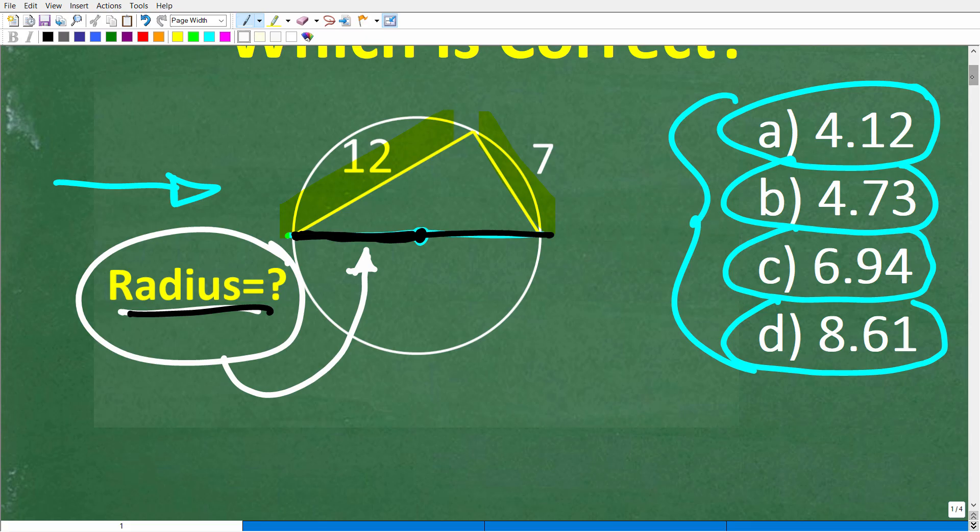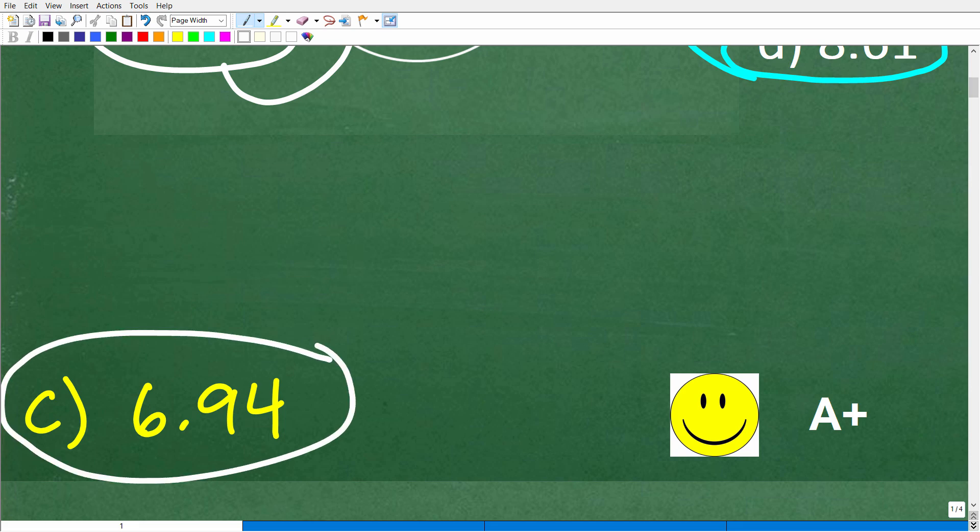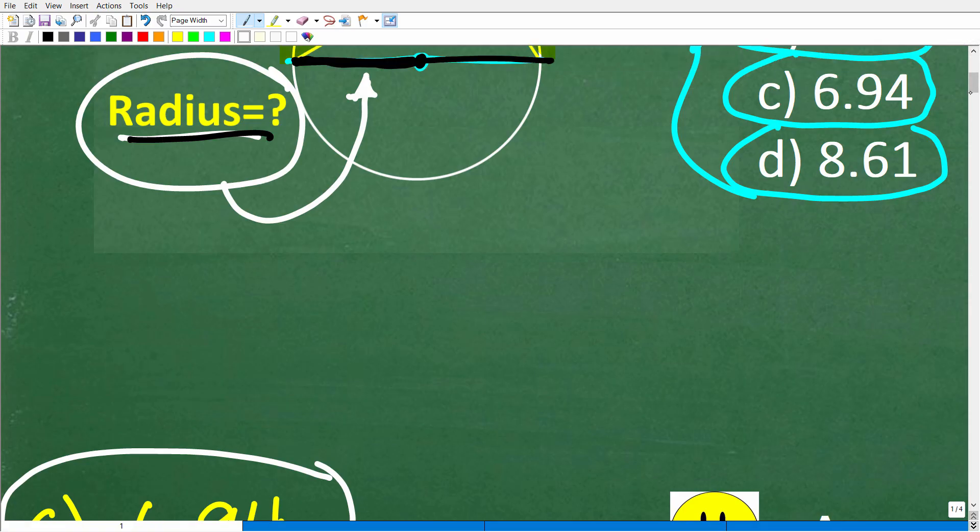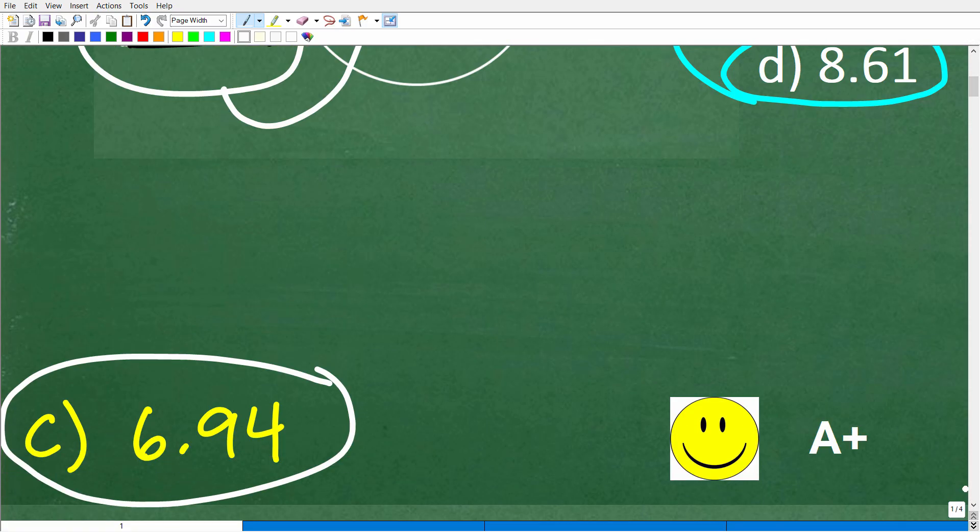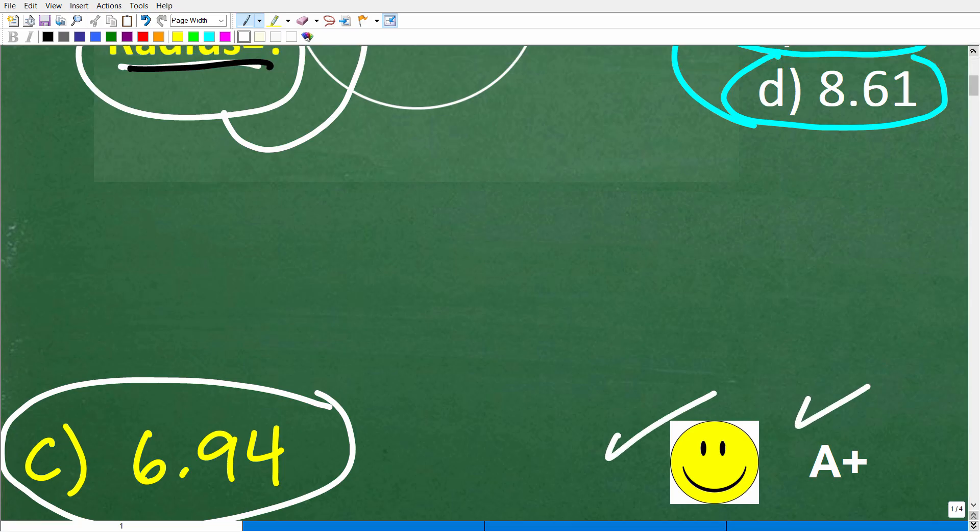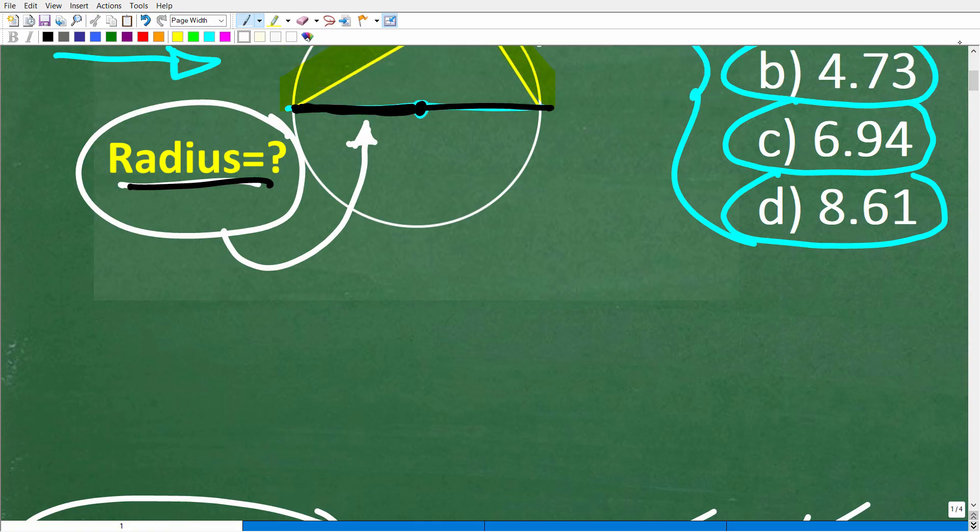Let's go ahead and take a look at the right answer. The correct answer is C, which is approximately 6.94. If you got that right, you definitely get a happy face and an A+. Matter of fact, if you were in my geometry course, I would just say take the rest of the year off.